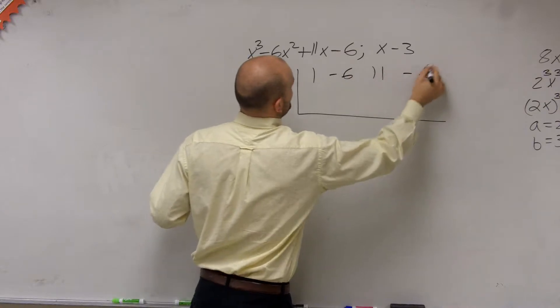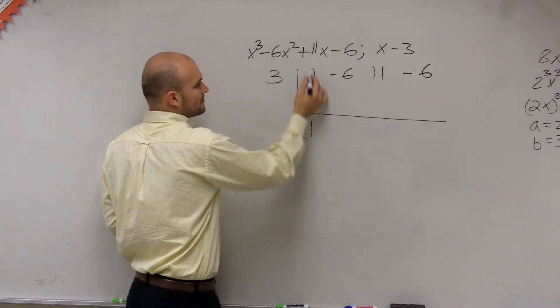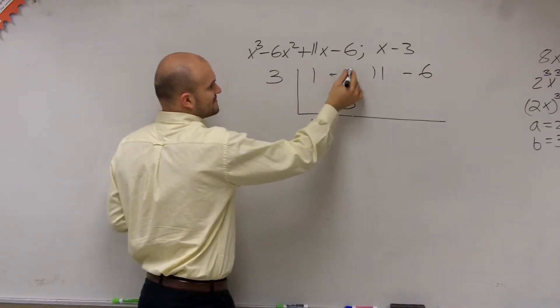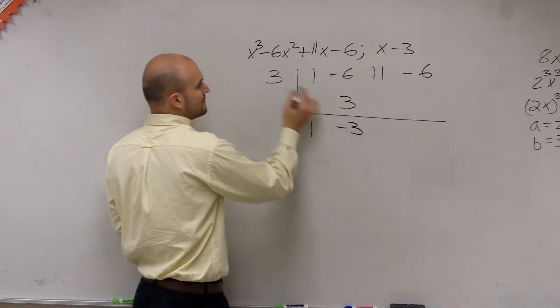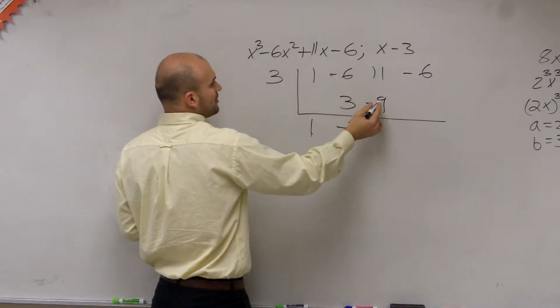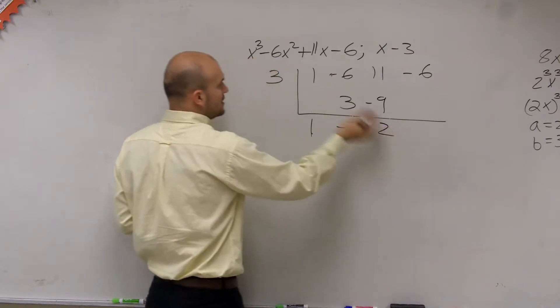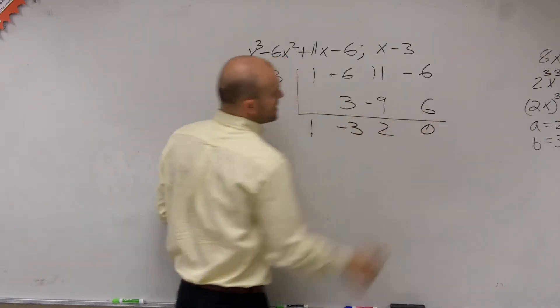1, negative 6, 11, negative 6. Bring down the 1. 1 times 3 is 3. Negative 6 plus 3 is negative 3. Negative 3 times 3 is negative 9. 11 plus negative 9 is positive 2. 2 times 3 is 6. Bring down a remainder of 0.